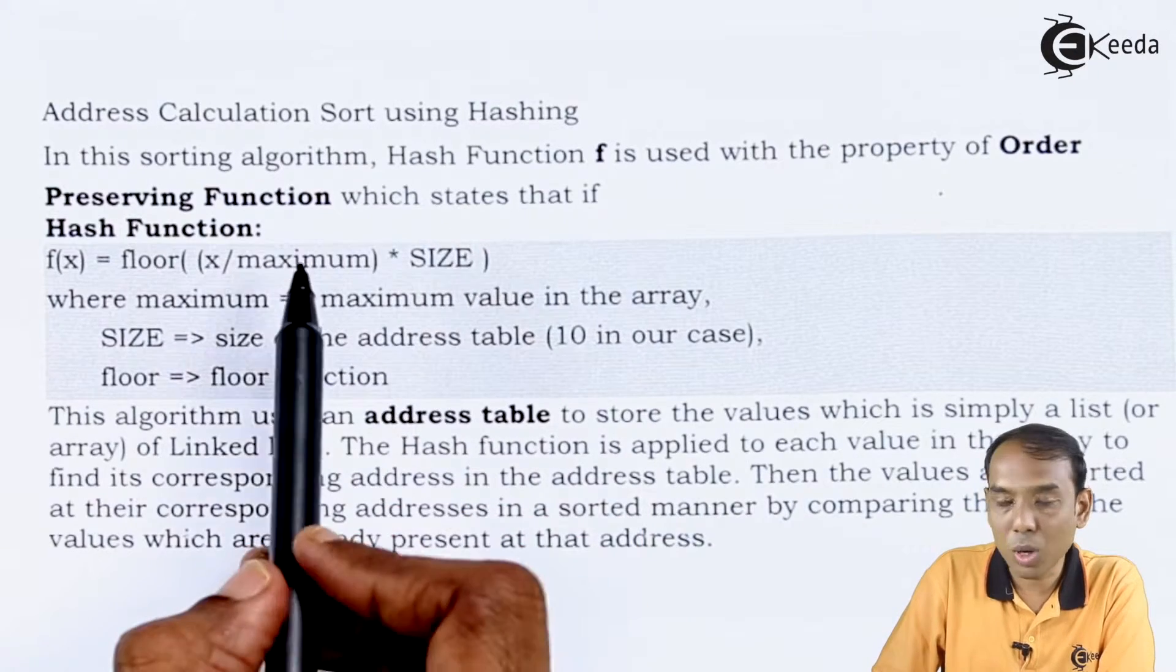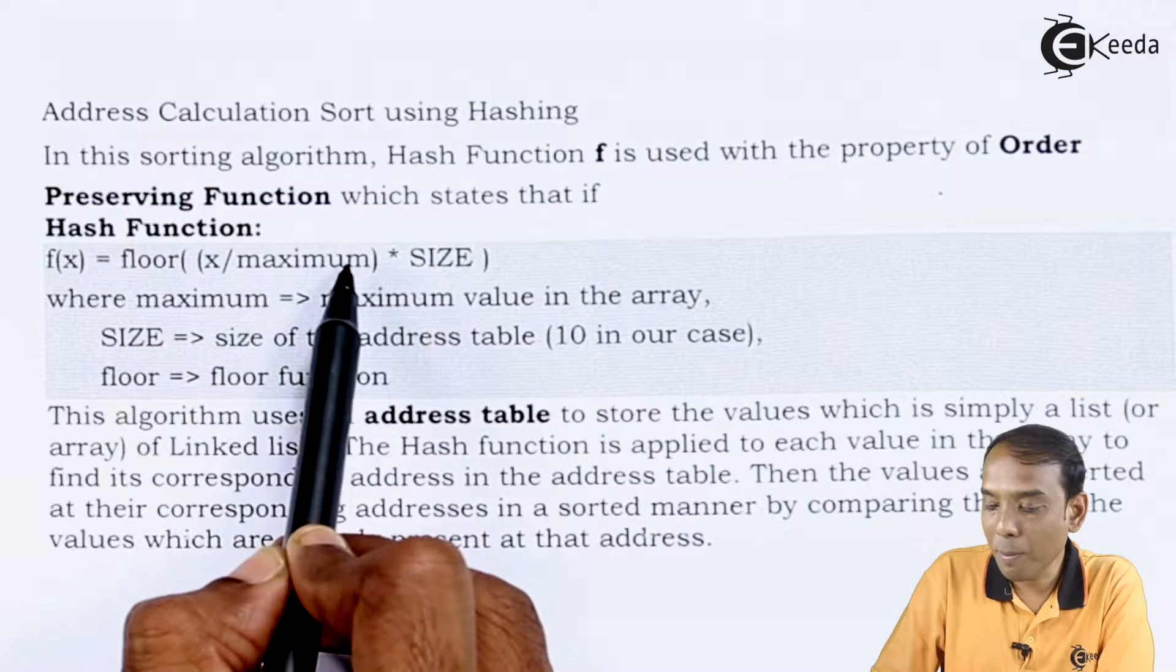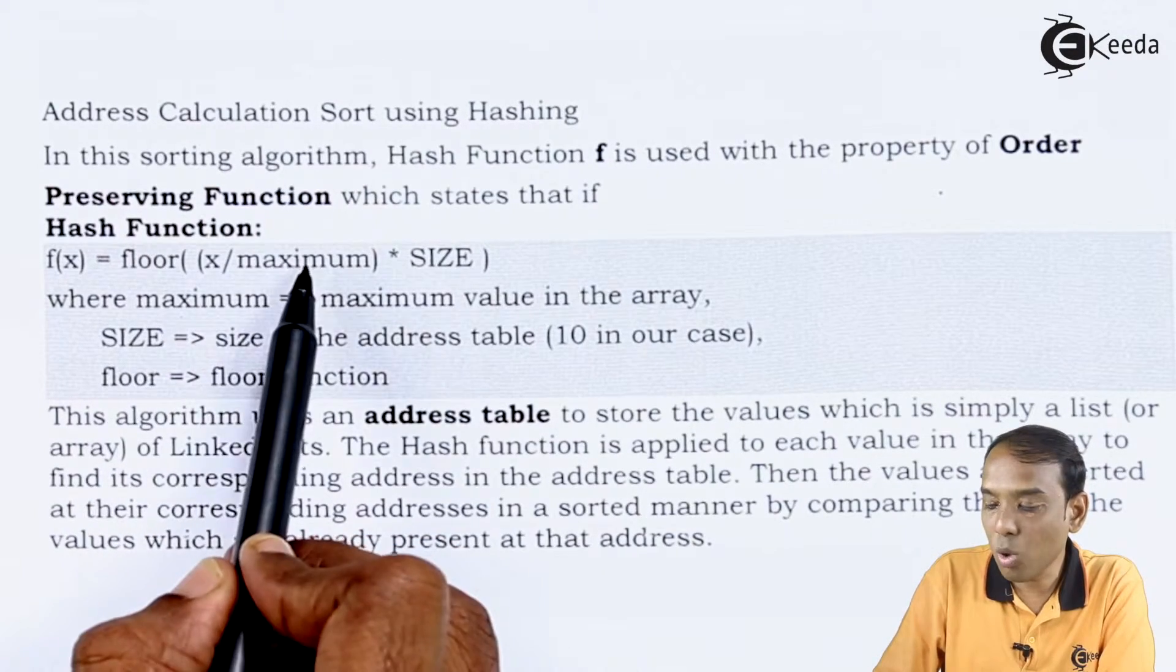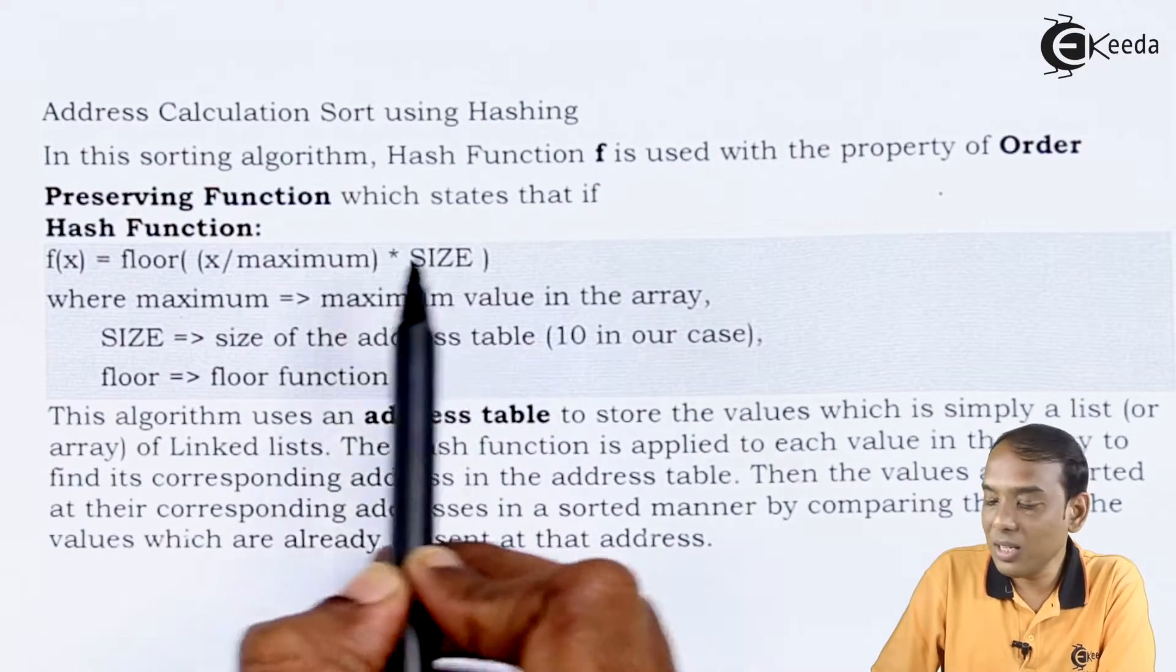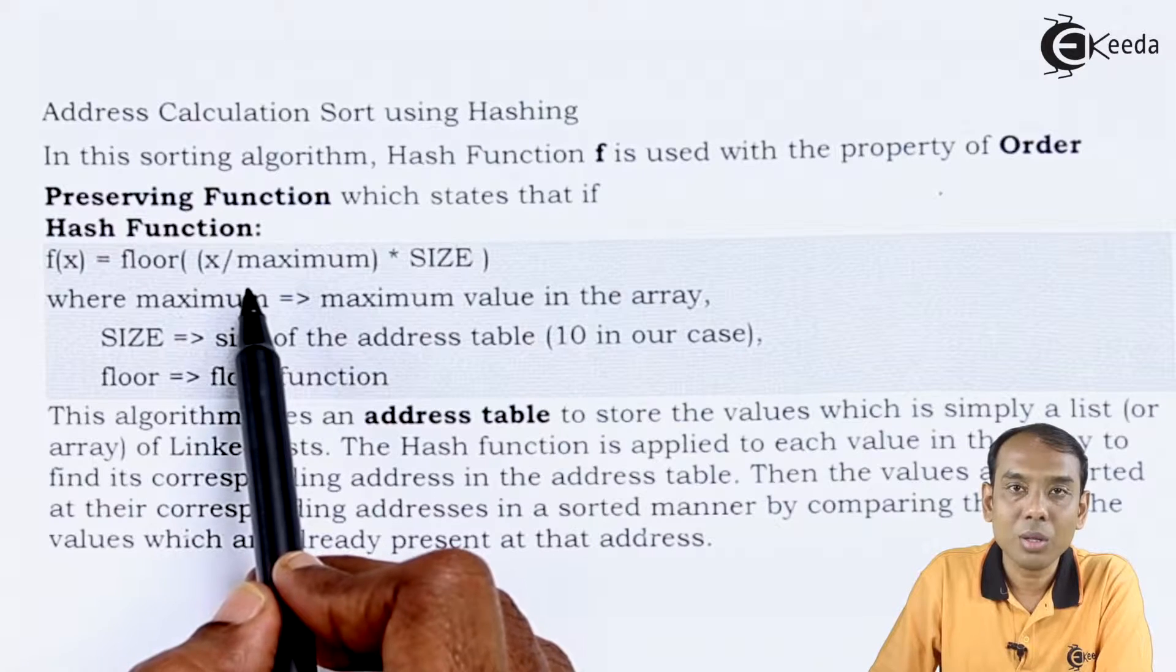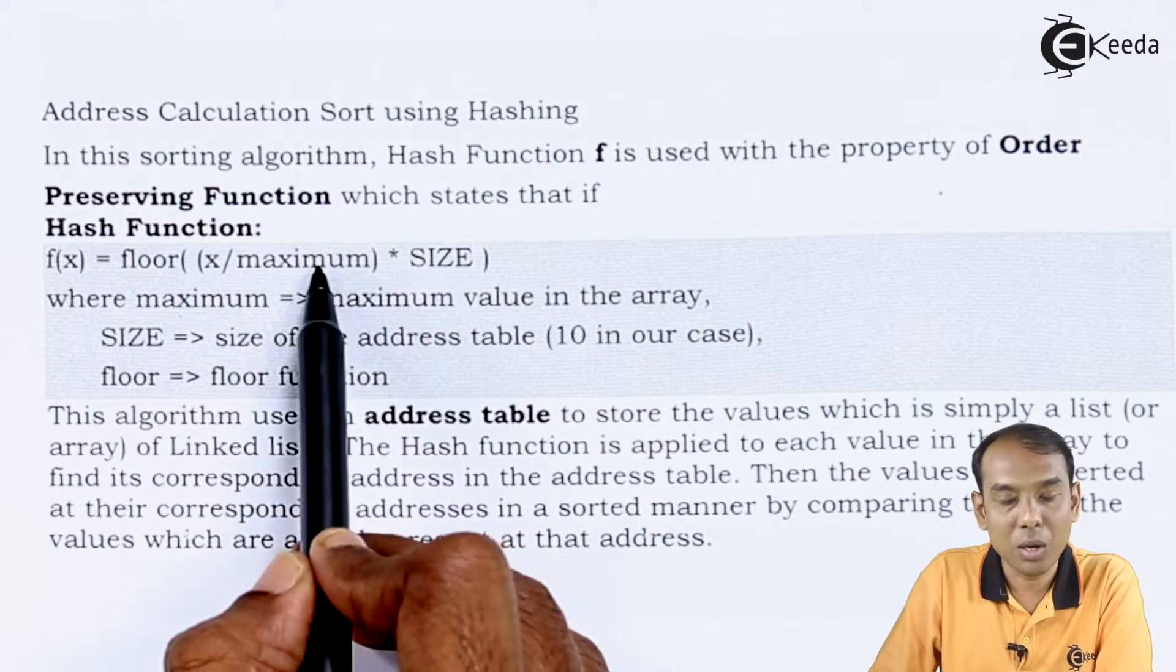Let us go one by one. What do you mean by each term? Let us begin with the first term called as max. That is where maximum. Here the maximum is what? Maximum value in the array. That is the highest set of value. Let us say we have 20. This is the maximum value in the given array. So your maximum value is 20.